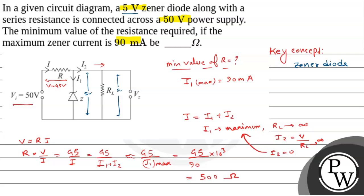That means the minimum value of the resistance is 500 ohm. So our answer is 500. Hope you understand it. Best of luck.